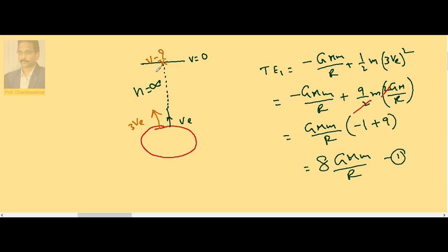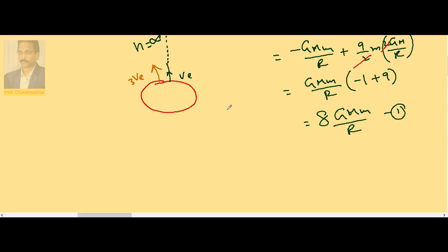This is the point where I am taking the final energy, final total energy TE₂. So again, potential plus kinetic - since it is at infinity, potential is zero, kinetic is (1/2)mv². So according to law of conservation of energy, these two energies must be equal.